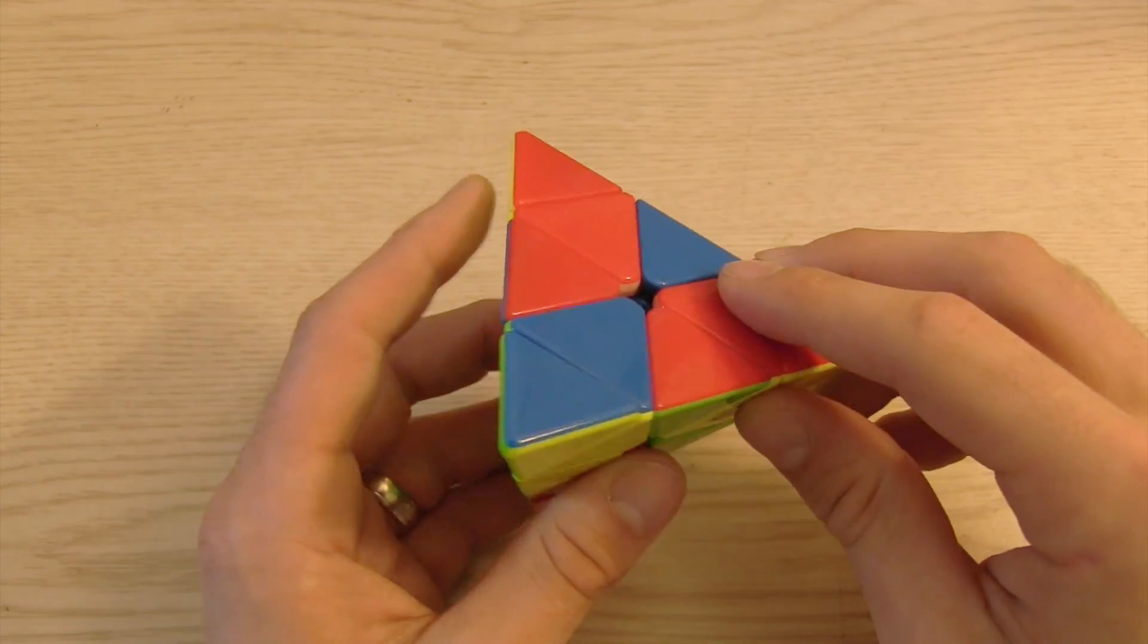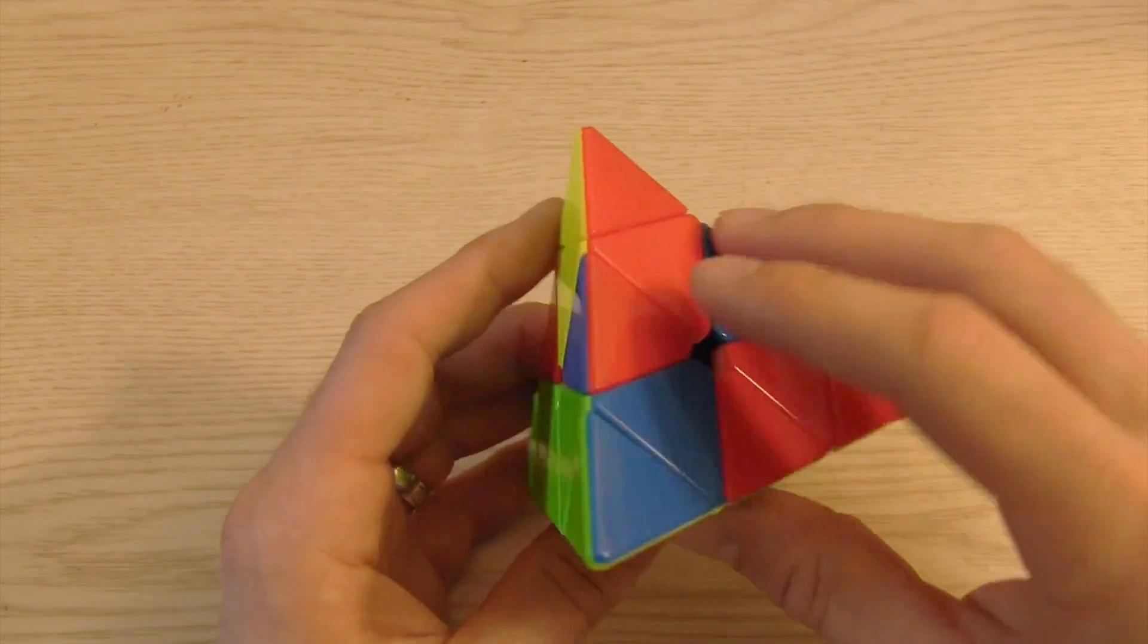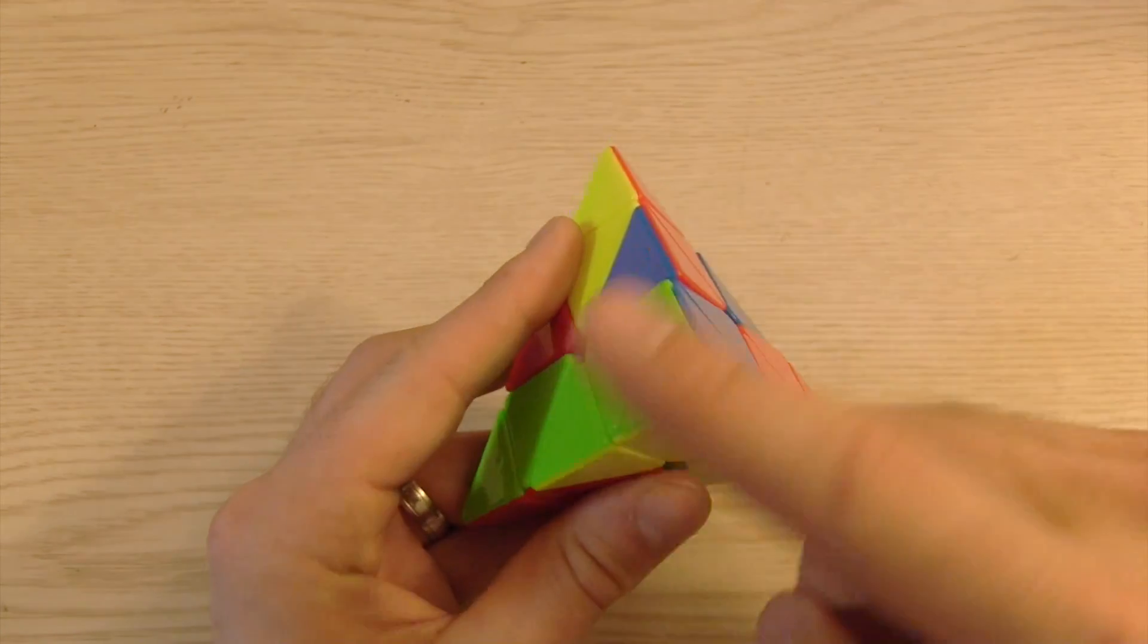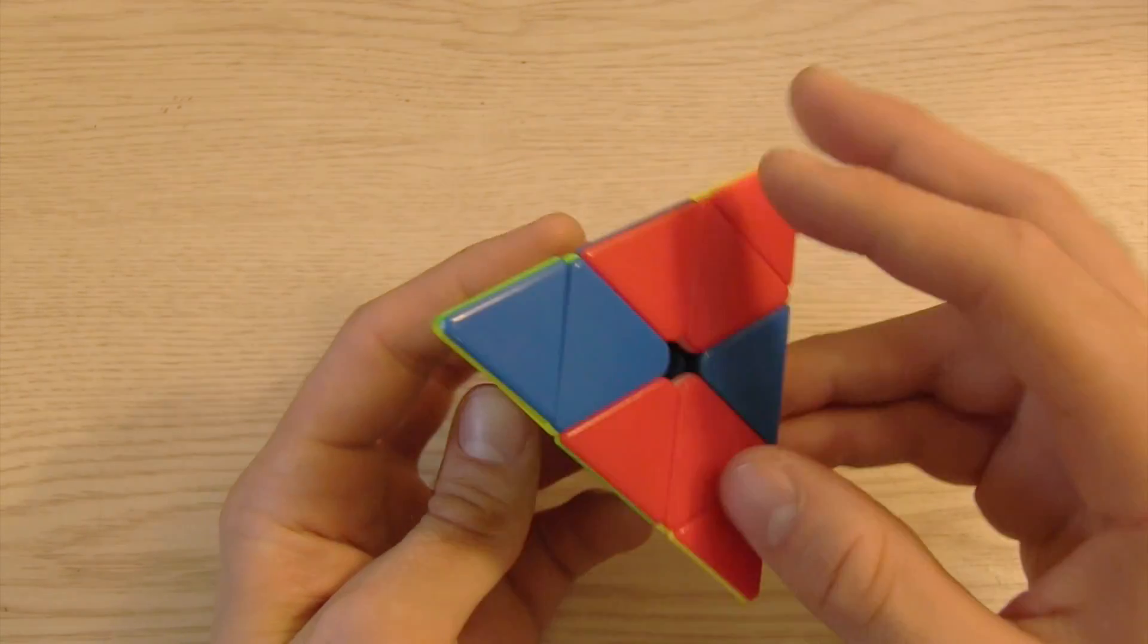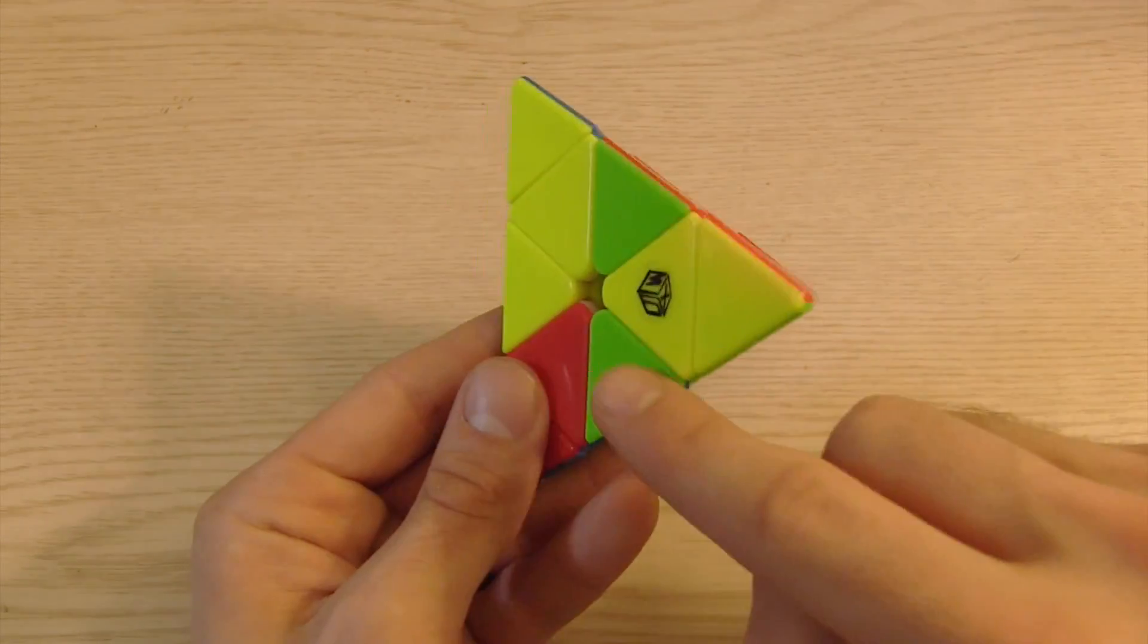This one's already solved so I'm going to kind of go up here and I either need blue yellow or blue green. Since we have blue, green, yellow on top, that means red is going to be on bottom. Well, here's blue yellow, and here's blue green.